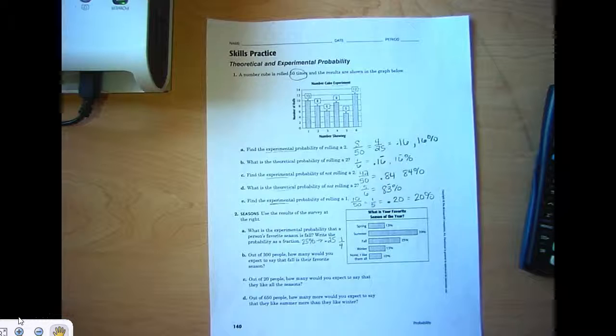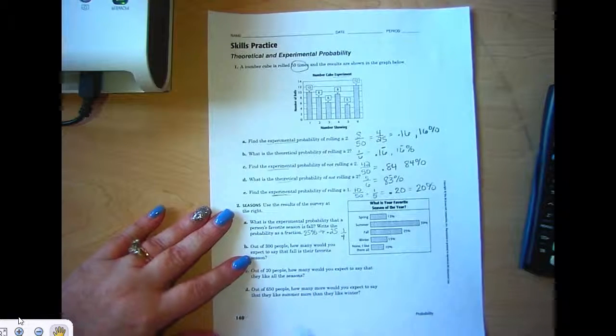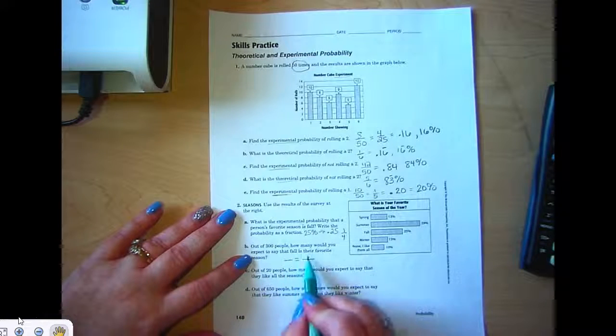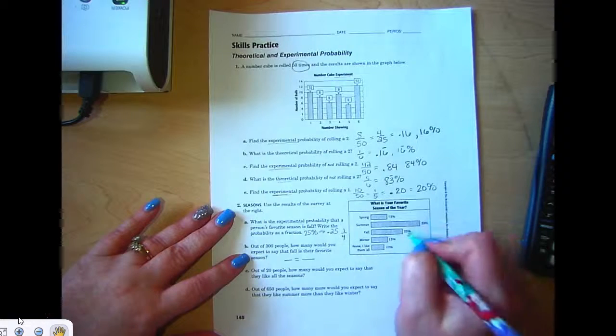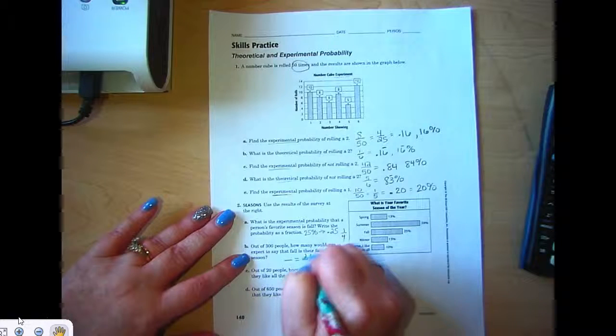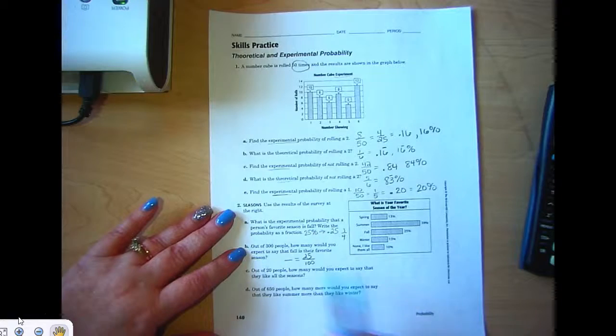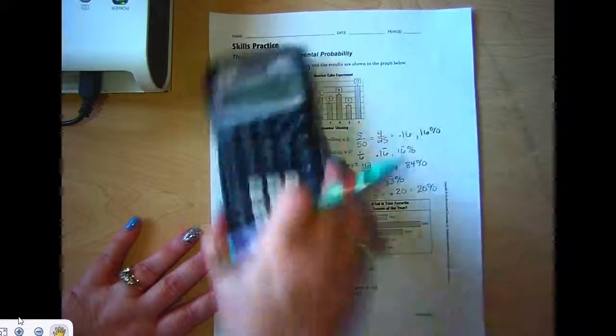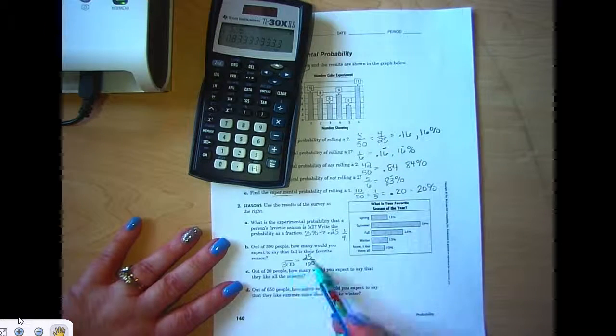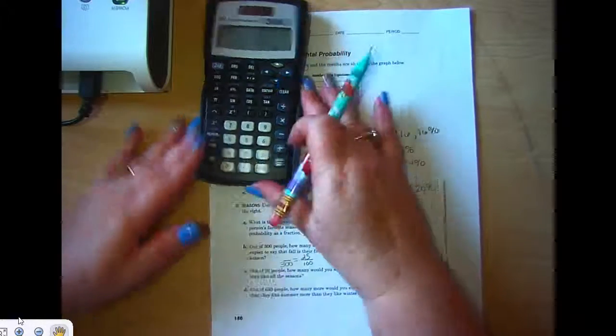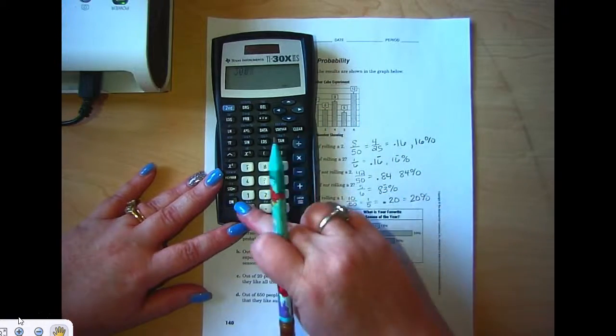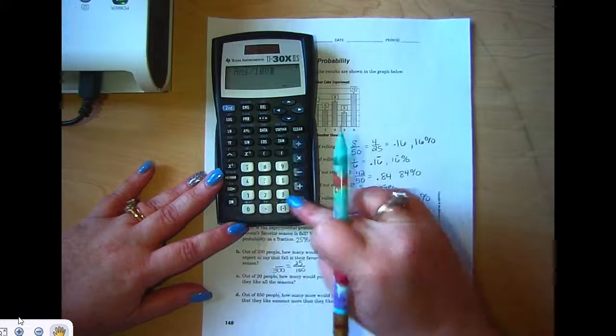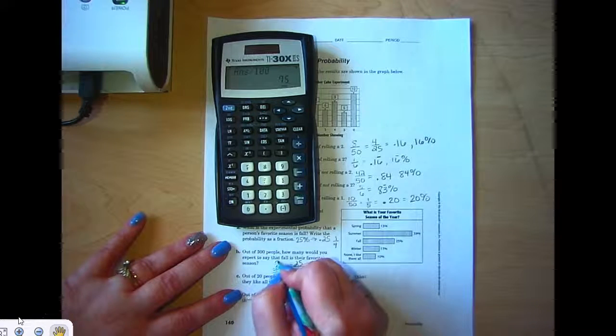Out of 300 people, how many would you expect to say that fall is their favorite season? Remember the percent proportion: part over whole equals percent over 100. Fall is 25 percent, so 25 out of 100. Out of 300 people, how many do you think would like fall? We're making a prediction using our data—we did that in the last unit as well. So 300 times 25 divided by 100, so we would say 75 people.